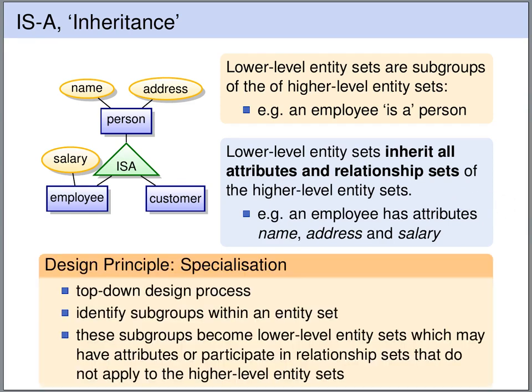We can design such entity relationship diagrams either top down or bottom up. The top down design process is called specialization. Here we start from the higher level entity sets and identify subgroups within them. These subgroups become the lower level entity sets. They may have additional attributes and may participate in relationship sets that the higher level entity sets do not participate in.